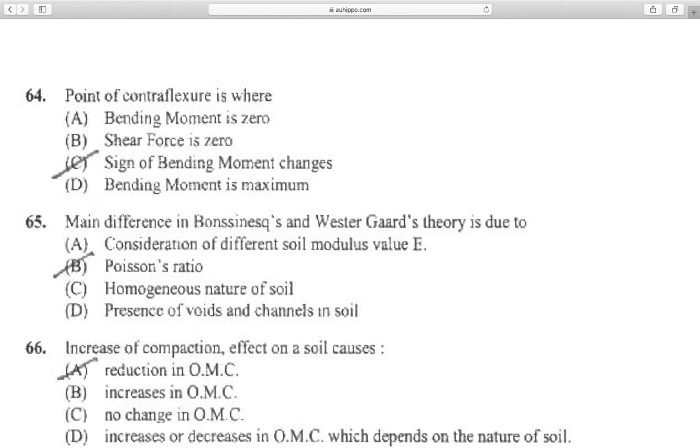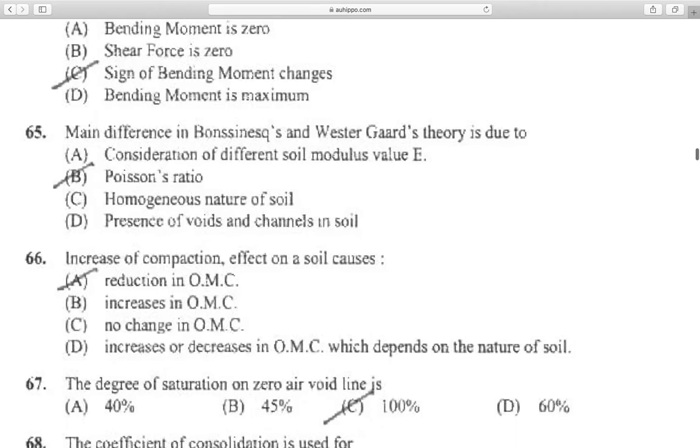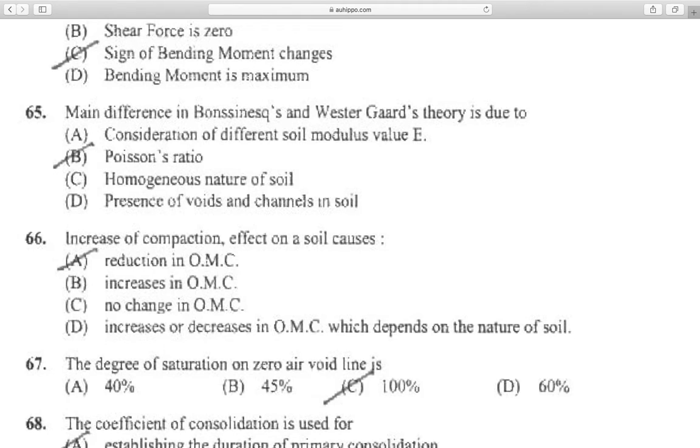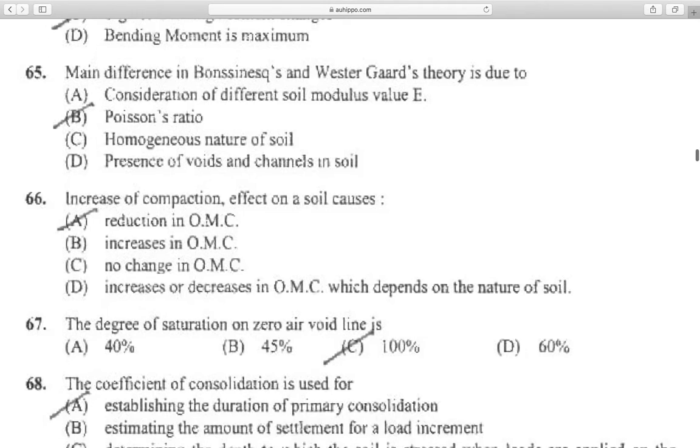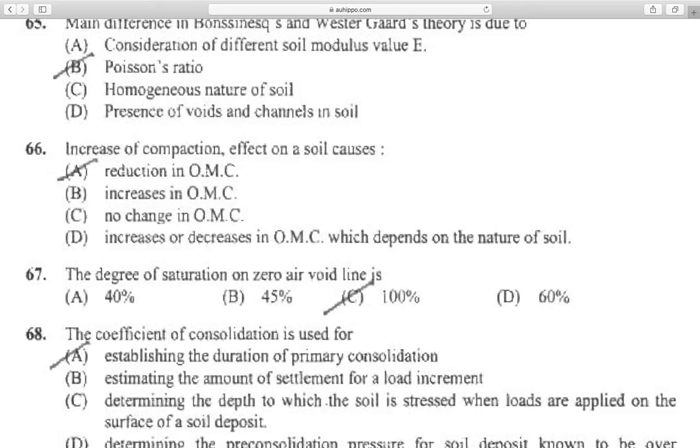Question 64: Point of contraflexure is where the sign of bending moment changes. Question 65: The difference between Boussinesq and Westergaard's theory is due to Poisson's ratio. Increase of compaction in soil causes reduction in OMC.